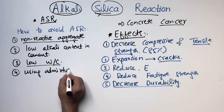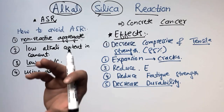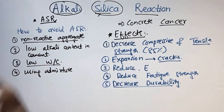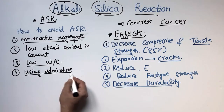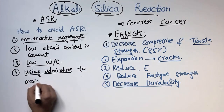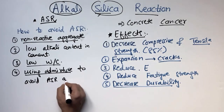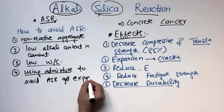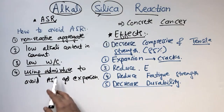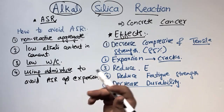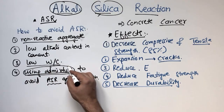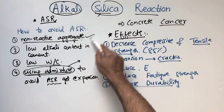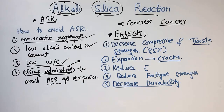The fourth method is using admixtures. There are special admixtures used specifically to reduce the ASR expansion gel. However, these admixtures are really expensive and costly, so they are not generally preferable. We can use other methods to reduce the ASR reaction in concrete structures instead.